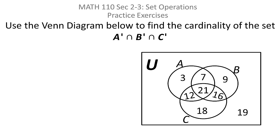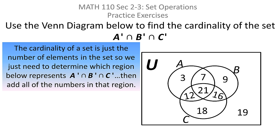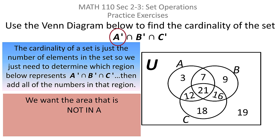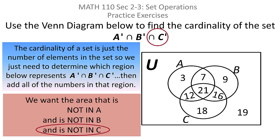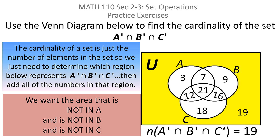Use the Venn diagram below to find the cardinality of the set A complement intersect B complement intersect C complement. The cardinality of the set is just the number of elements in the set. We need to figure out which region is represented by that intersection. We're looking for regions that aren't in A, aren't in B, and aren't in C. The only area not in any of the three circles is the yellow area, and that yellow area has a cardinality of 19.